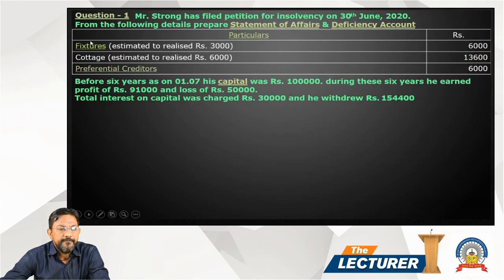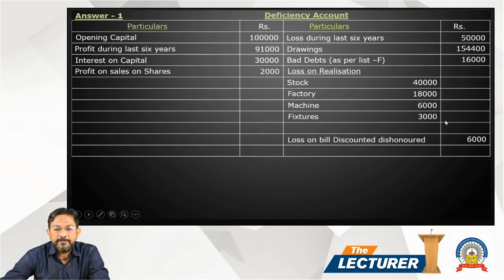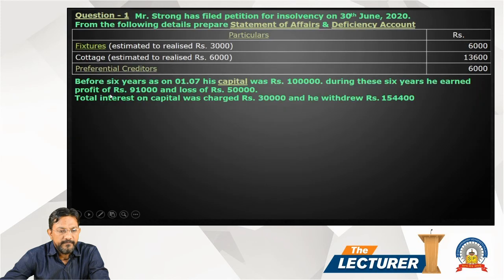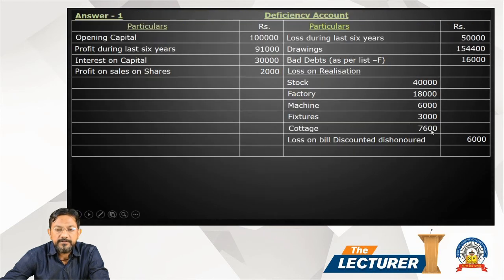Fixture: book value 6,000, realizable value 3,000. Statement of affairs List E — fixture 6,000, realizable value 3,000. Loss is 3,000 — deficiency account right-hand side: fixture 3,000. Cottage: property List E, statement of affairs 13,600 book value, realized 6,000. Property List E — cottage 13,600, realizable value 6,000. Difference is 7,600 loss — deficiency accounts right-hand side: cottage 7,600. Total the outer column.